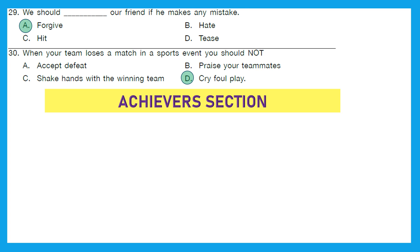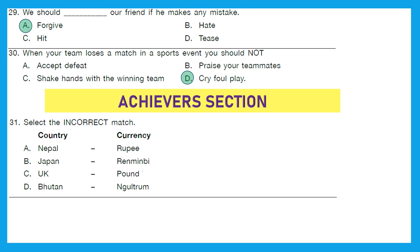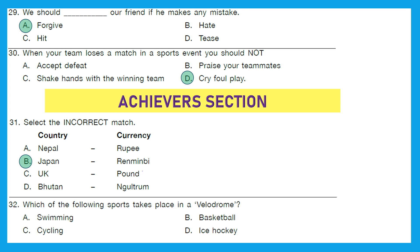Question 31: Select the incorrect match — one column has countries, the other has currencies. Nepal–Rupee is correct. Japan–Renminbi is incorrect because Japan's currency is the Japanese Yen. UK–Pound is correct. Bhutan–Ngultrum is correct. So the incorrect match is option B — Japan–Renminbi.